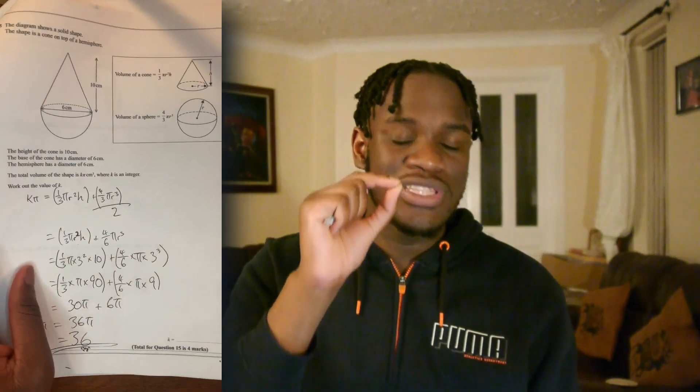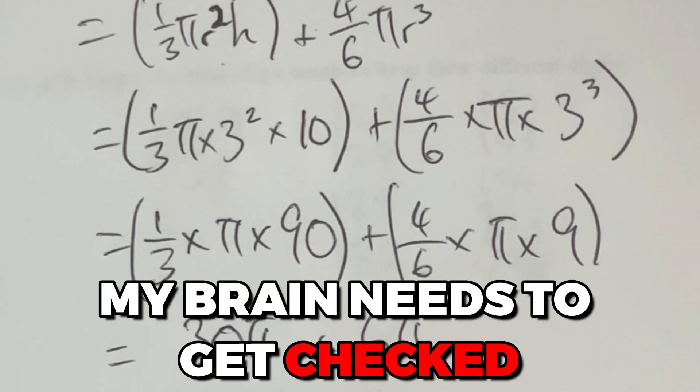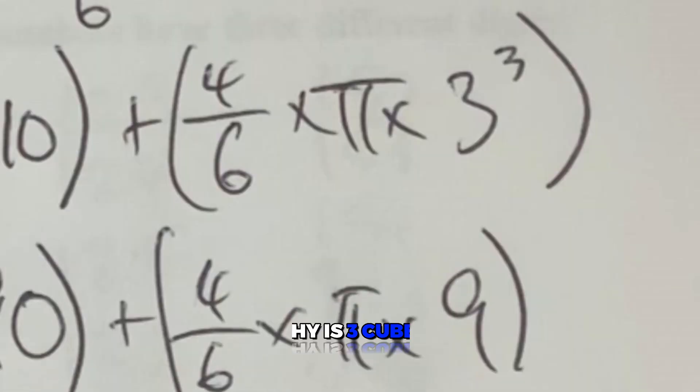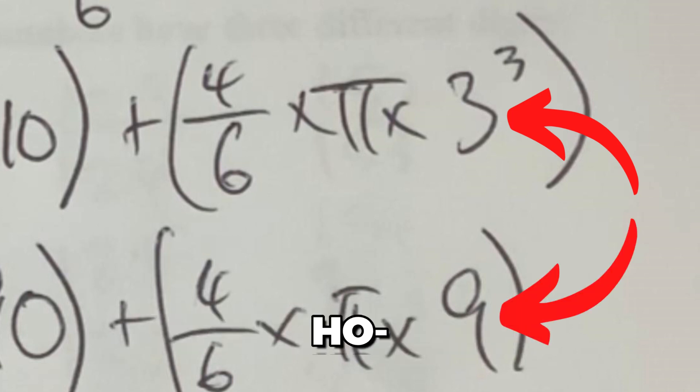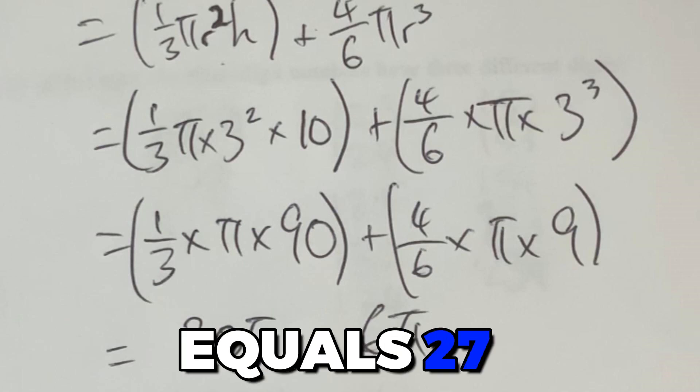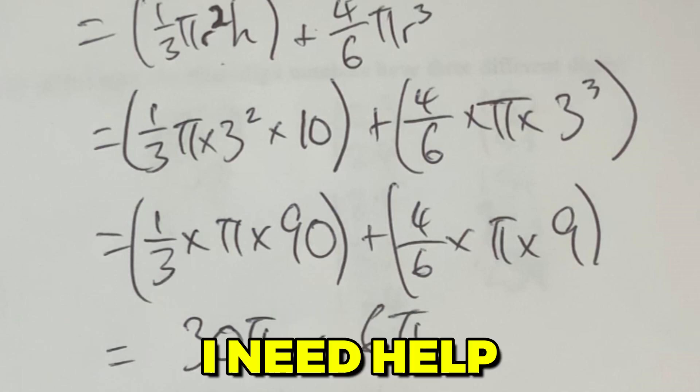This one — if I don't get 4 out of 4 for this one, rude. I'm so certain I got this right. It was at this moment that he knew... he got it wrong. I got it wrong! Just looking at this now, my brain needs to get checked — why is 3 cubed 9? If I had put 3 cubed equals 27, I would have got the right answer. I'm going to give myself 2 out of 4 for that. I got robbed.